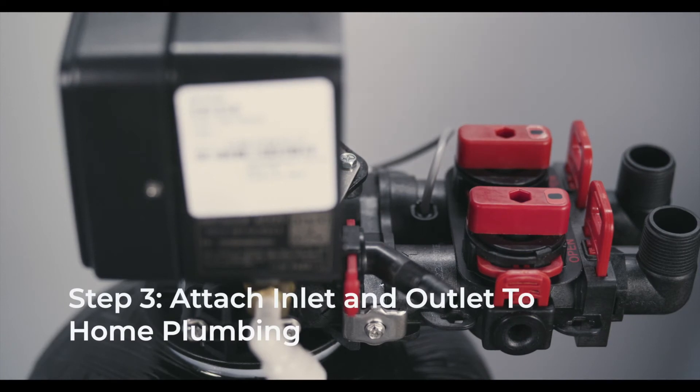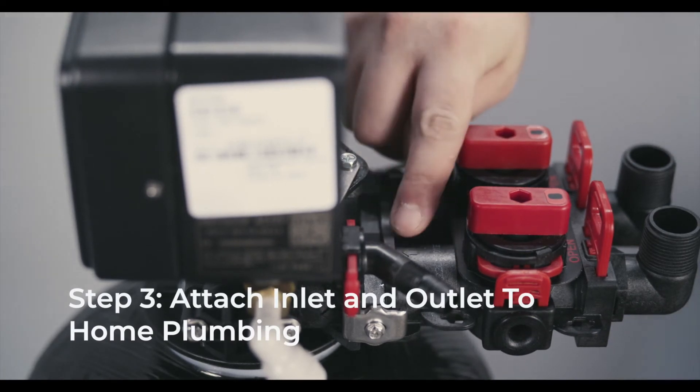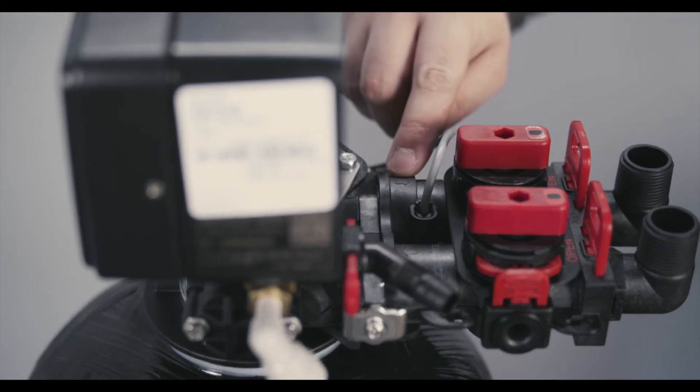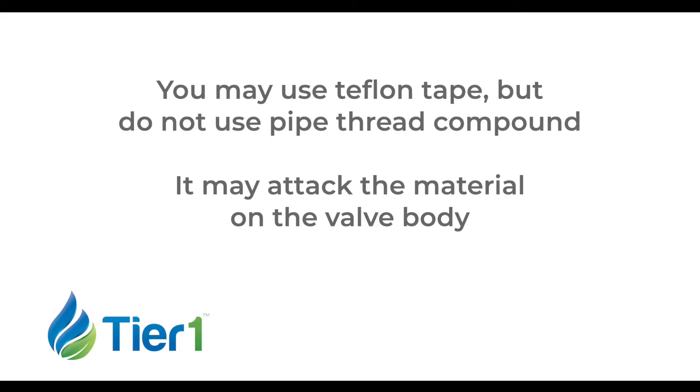Next, connect the inlet and outlet of the filter to your home's plumbing. There are raised arrows on the bypass assembly indicating the direction of the water flow. You may use Teflon tape for a tight seal, but do not use pipe thread compound as it may attack the material on the valve body.